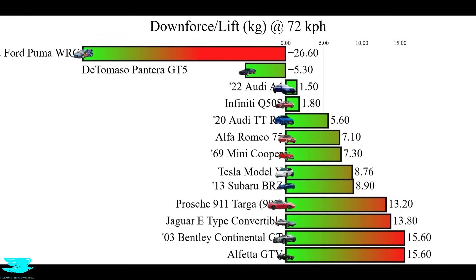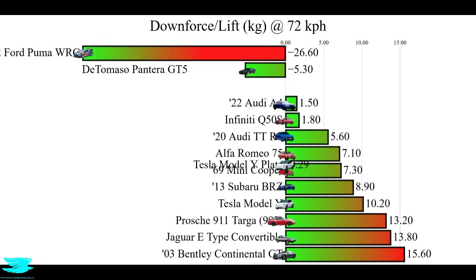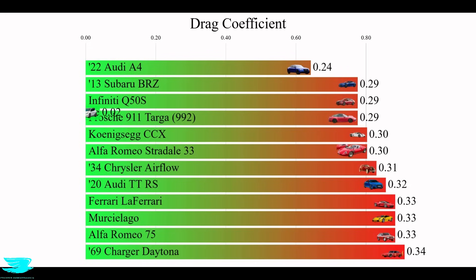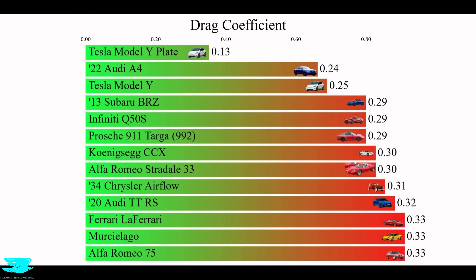In terms of the effect it has on the overall lift, the original Model Y produces 10.2 kilos of lift at 72 kph. With this plate, it produces only 5.4 kilos, almost half. For the drag, there is a penalty because the original version had a good drag coefficient of 0.25, while with this plate, it is now 0.28.